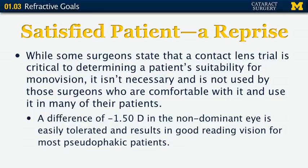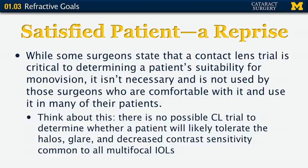Interestingly, contact lens trials are important to try monovision in phakic patients. But in pseudophakic patients, monovision is invariably perfectly fine. A difference of minus one and a half diopters or so in the non-dominant eye is easily tolerated and results in good reading vision for most or all pseudophakic patients. There is no possible contact lens trial to determine whether a patient is likely to tolerate the halos, glare, and decreased contrast sensitivity that are common to all multifocal intraocular lenses — we put those in and see how the patient adapts. So a contact lens trial for monovision is far less necessary.